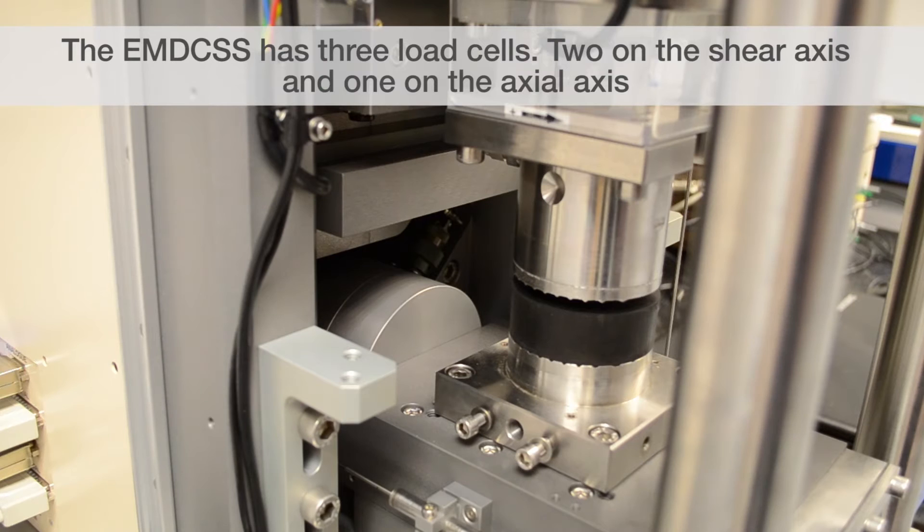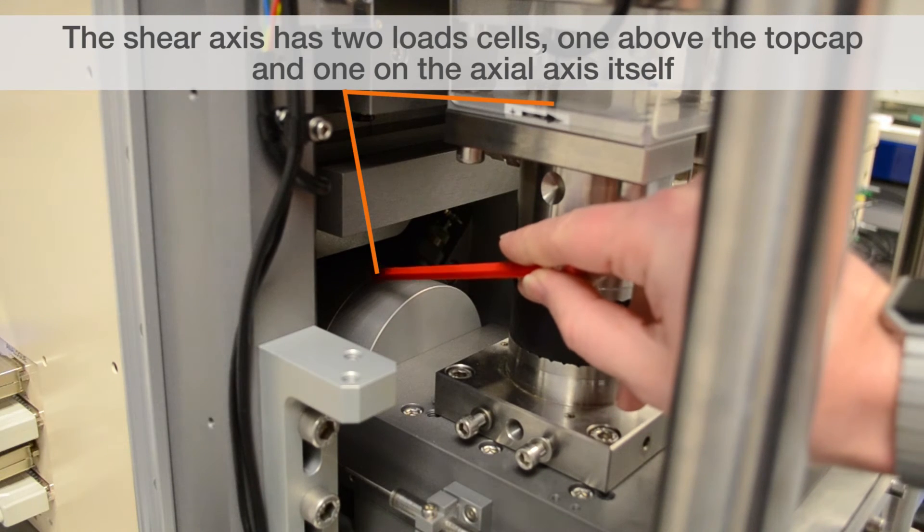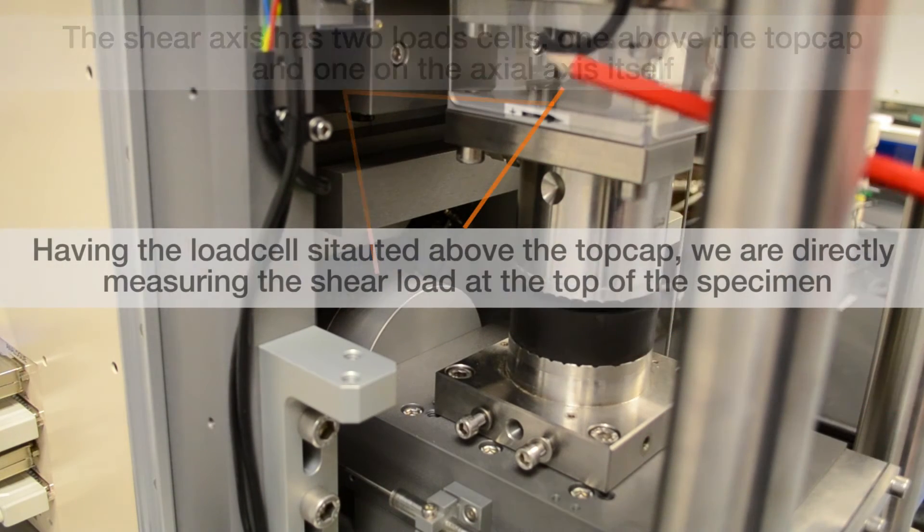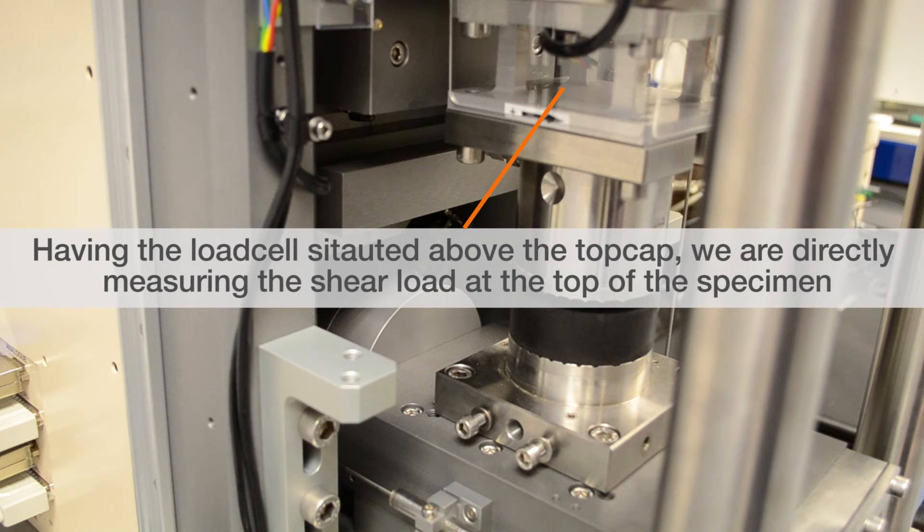The GDS EMDCSS has three load cells that are currently used within the machine. We have two on the shear axis and one on the axial axis. The shear axis has two load cells situated, one here above the top cap and one here on the axial axis itself. Having the load cell situated above the top cap, we are directly measuring the shear load at the top of our specimen.